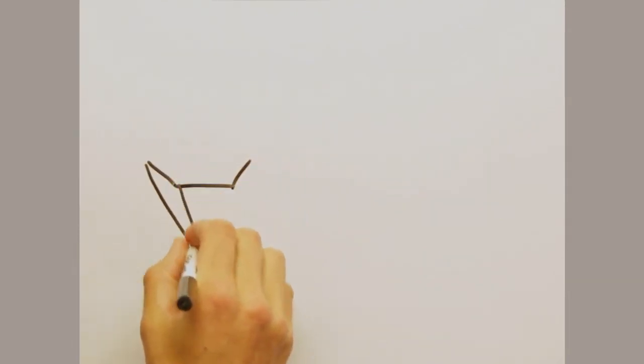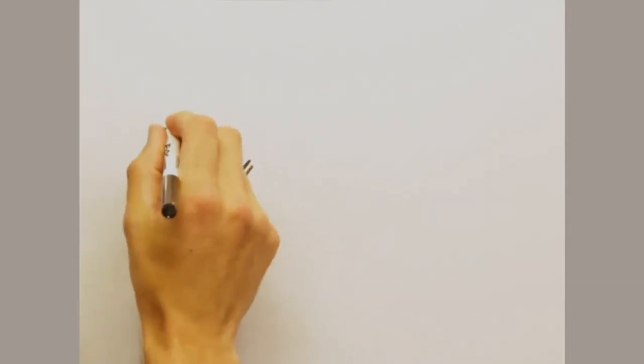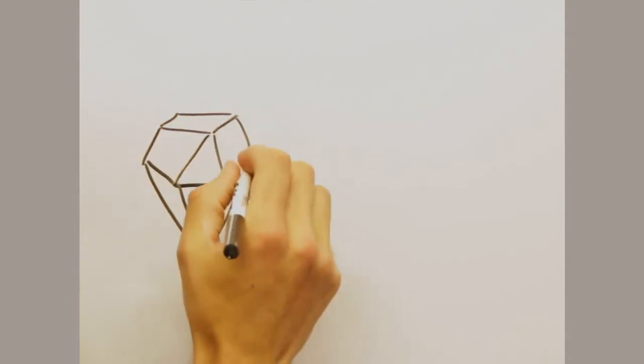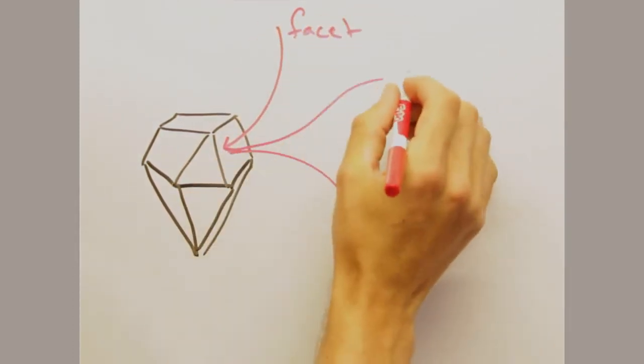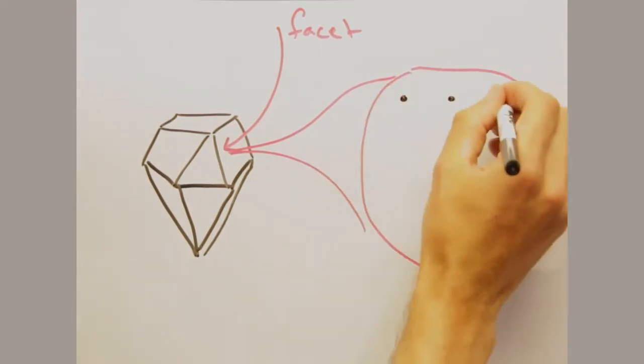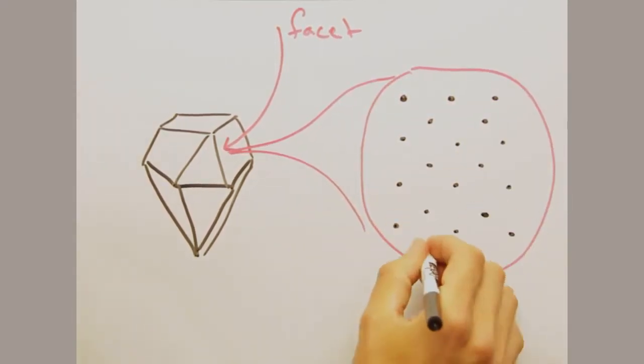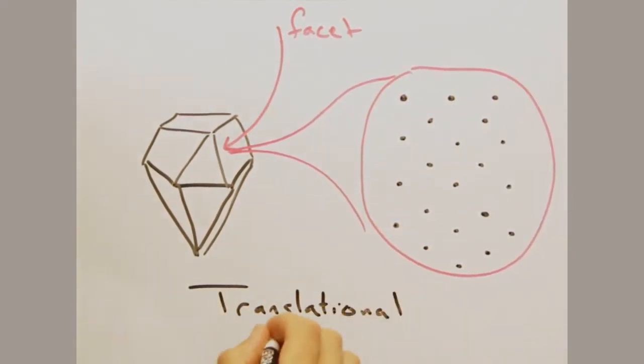Since we deal a lot with crystals in this class, it'd be a good idea to be clearer about our definition of a crystal. Imagine holding a diamond in your hand and zooming in on one of these facets. As you get to the individual atom scale, one would see a periodic arrangement of atoms that have translational symmetry.